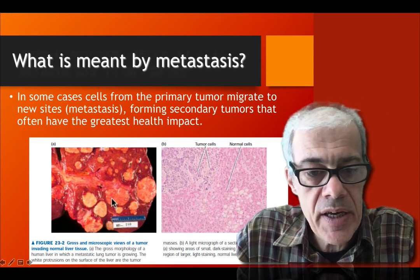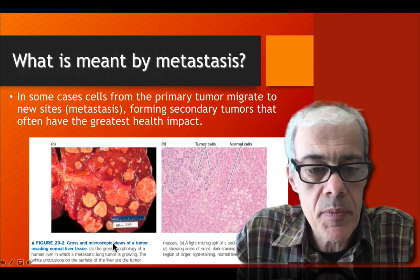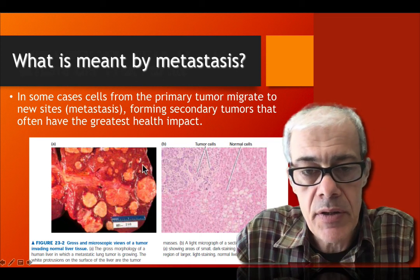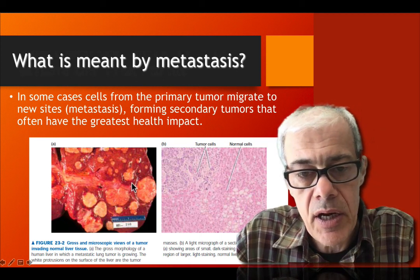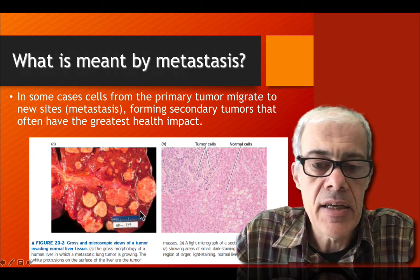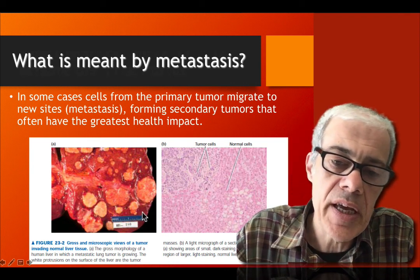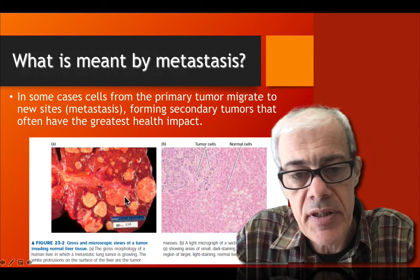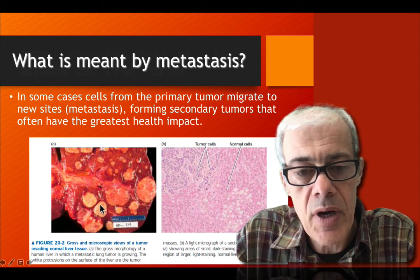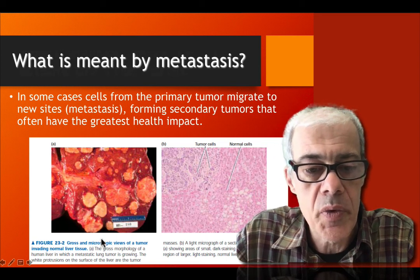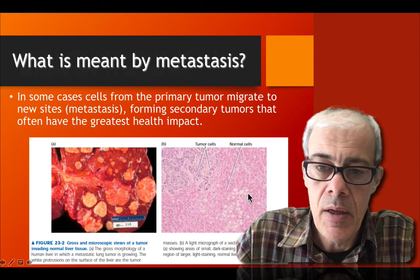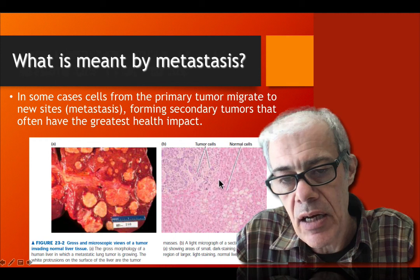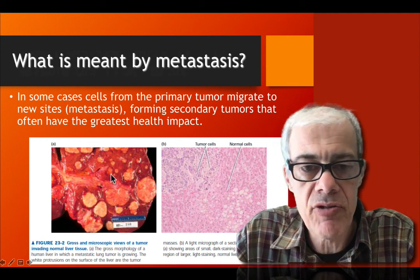Here is a microscopic view of a tumor that has invaded a normal liver. These are the normal liver cells, and a cancer from another part of the body has metastasized, got into the bloodstream, got into the liver, and then established new colonies — new outgrowths of cells within the liver. This shows the same information at a microscopic rather than macroscopic level.